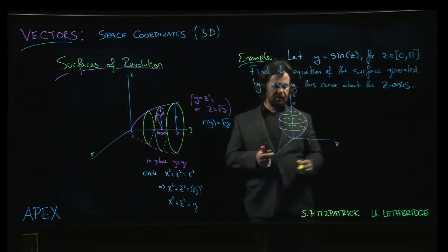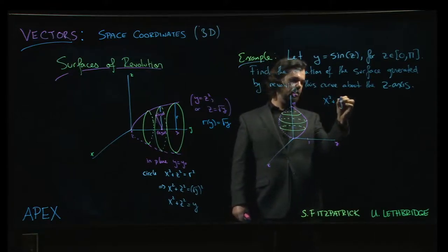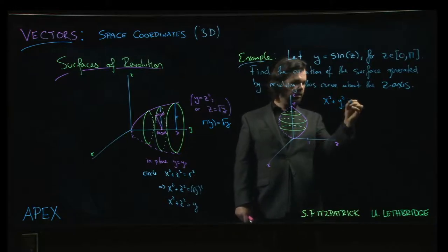That means our circles lie in planes that are parallel to the xy plane. And so that means our circles should look like x squared plus y squared equals...